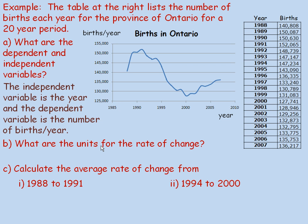In part B, we're asked what are the units for the rate of change. To get a slope or rate of change calculation, you take the unit on the vertical axis — the number of births per year — and divide it by the unit on the horizontal axis, which is the number of years. So we take births per year divided by years.